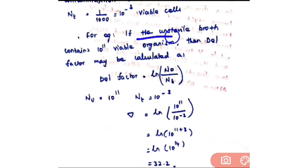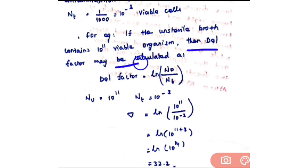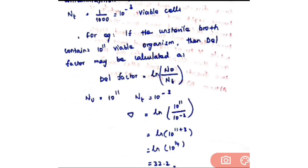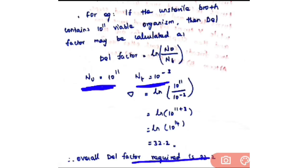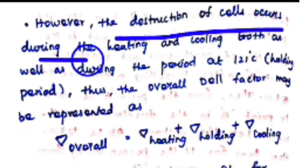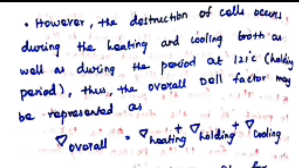For example, if the unsterile broth contains N0 = 10¹¹ viable organisms, the Del factor is: ∇ = ln(10¹¹ / 10⁻³) = ln(10¹⁴) = 32.2. So the overall Del factor required to reduce the viable cell count from 10¹¹ to 10⁻³ is 32.2. Cell destruction occurs during heating and cooling as well as during the holding time at 121°C.